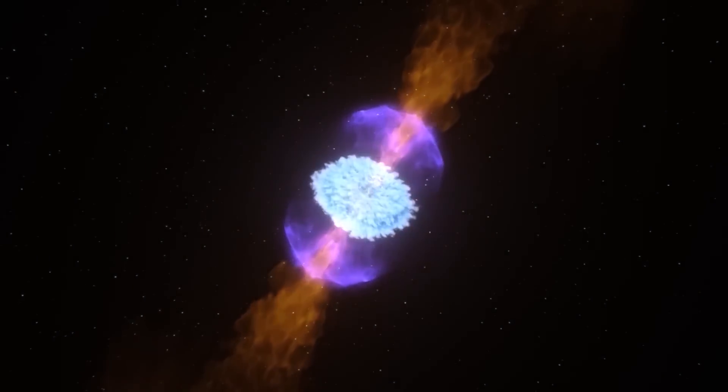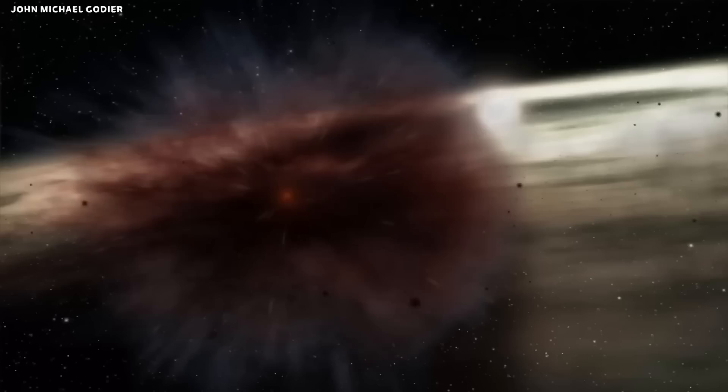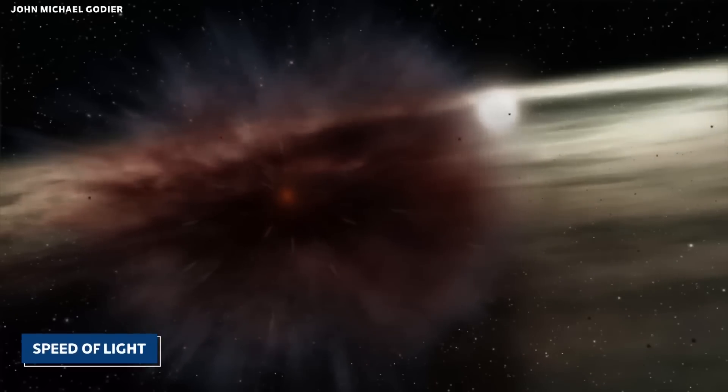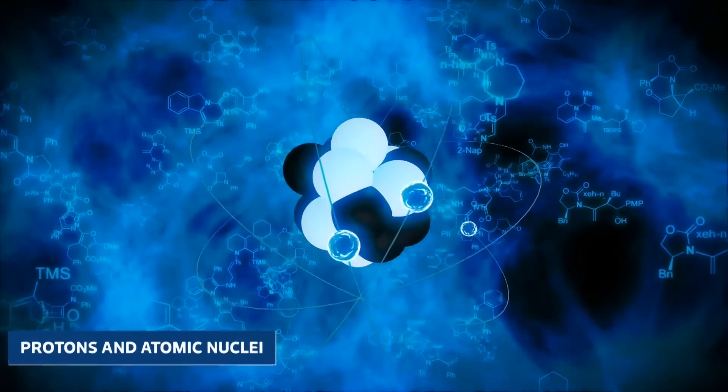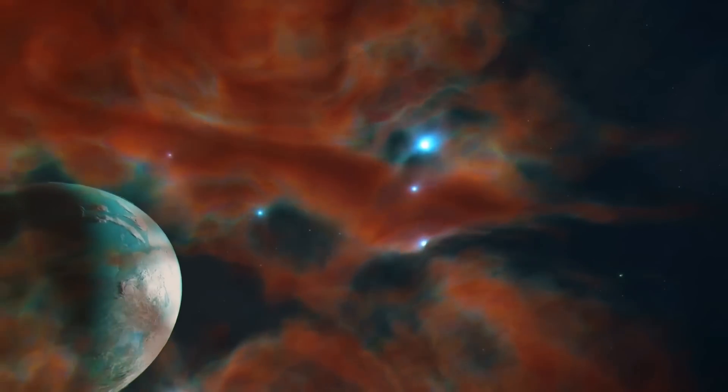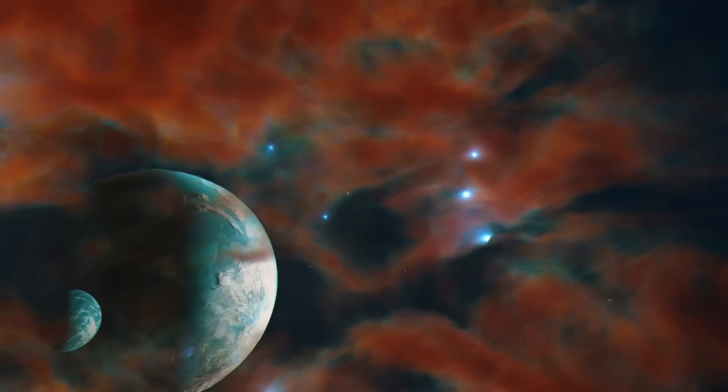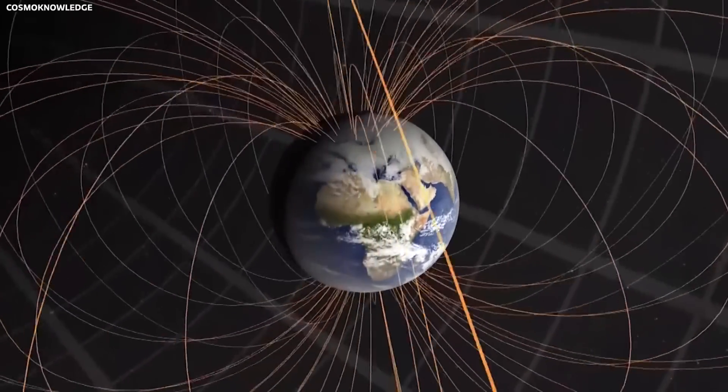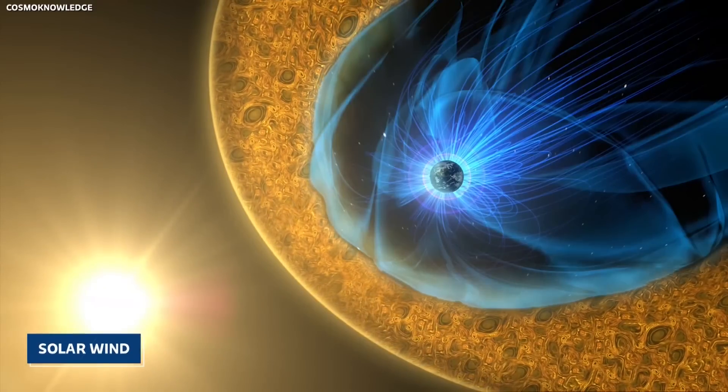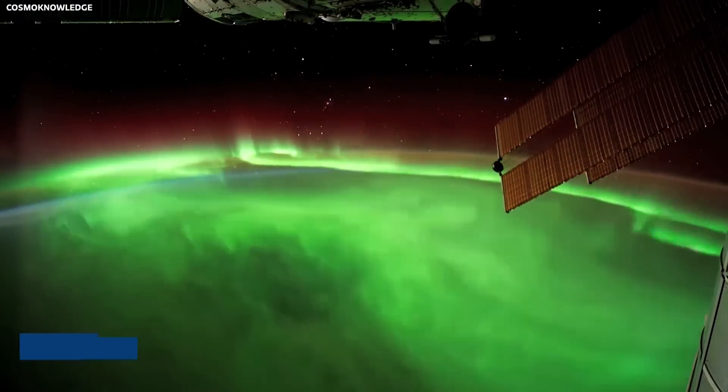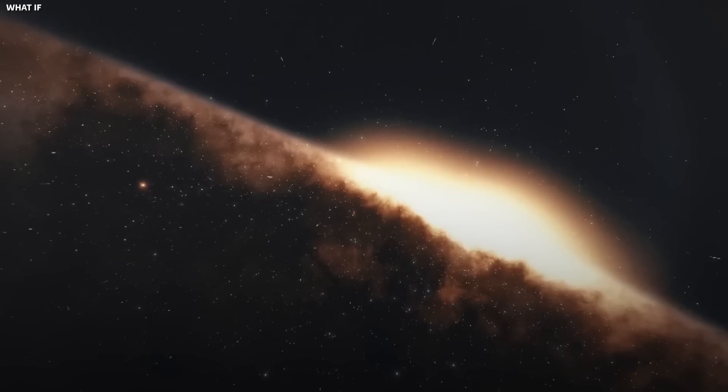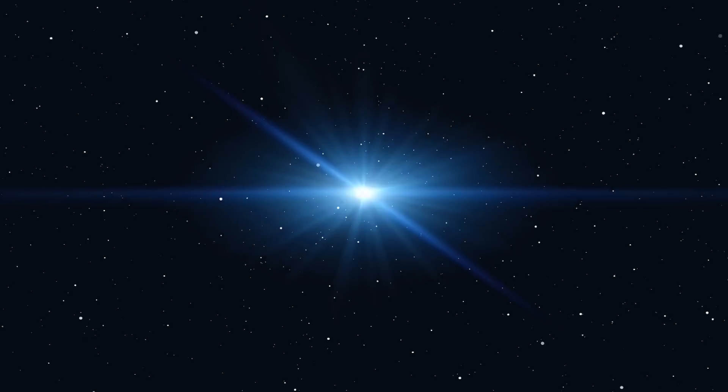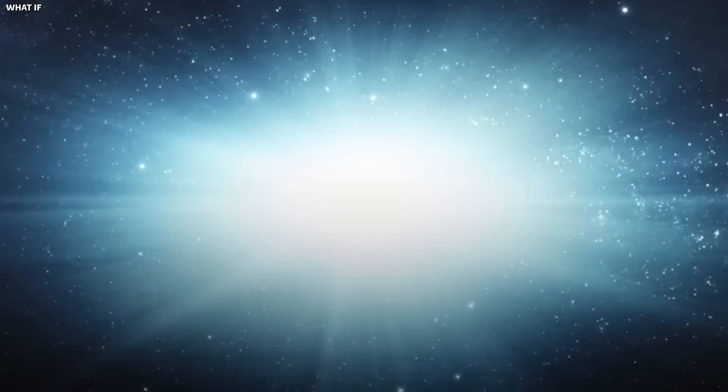Beyond the immediate vicinity of the explosion, the supernova would spew out a torrent of cosmic rays, high-energy particles that travel near the speed of light. These particles, primarily protons and atomic nuclei, would spread out in all directions, some of them eventually reaching our solar system. While Earth's magnetic field and atmosphere would shield us from the direct impact of these particles, they could influence the solar wind, a stream of charged particles emitted by the Sun. This interaction could lead to enhanced auroras, the mesmerizing light displays seen near the poles, making them visible at lower latitudes than usual.